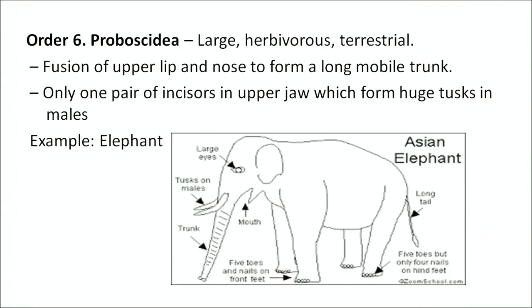The next order is Proboscidea — these are large, herbivorous, terrestrial animals. The upper lip and nose are fused to form a long, mobile trunk. Only one pair of incisors in the upper jaw is present, which form huge tusks in males. Example: elephant.